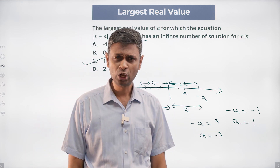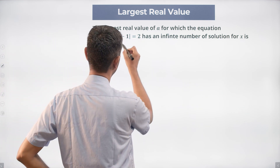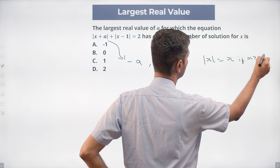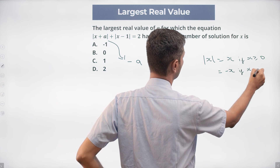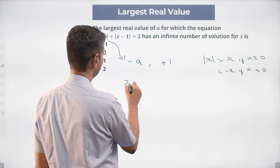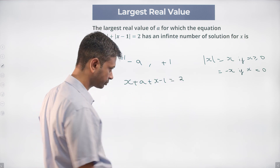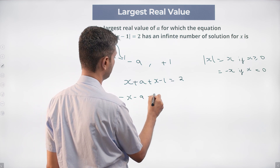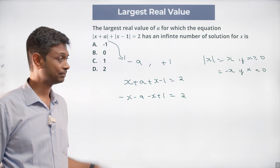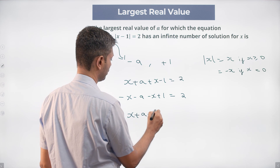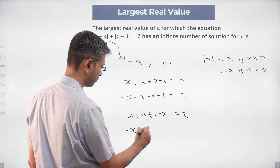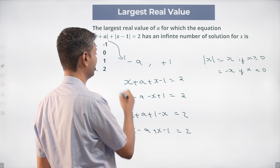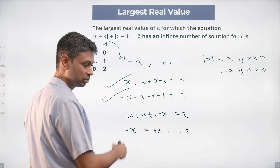The more algebraic way: denote the turning points as -a and +1. We know |x| = x if x ≥ 0, and -x if x < 0. So the cases are: (x + a) + (x - 1) = 2 when both are positive, giving 2x = 3 - a; or -(x + a) - (x - 1) = 2 when both are negative, giving -2x = 1 + a — each yielding specific solutions.